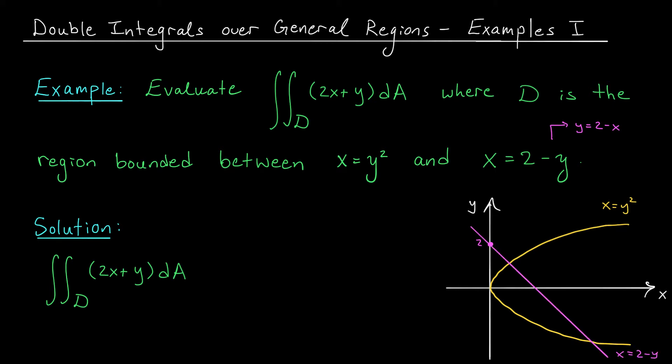So our region D is the region bounded between these curves. It's this region right here. Now, do you think this region is of type 1 or type 2? Well, to be of type 1, it would mean that it's bounded above and below by nice functions of x. And if we draw a vertical arrow through the region, you can see that